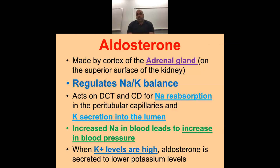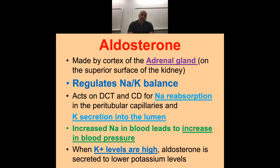If potassium is very high — say from eating a lot of spinach — I'll produce aldosterone to pee it out and lower it, which simultaneously increases sodium and blood pressure. One of the first things we say when someone has high blood pressure is to cut salt from their diet: if you lower salt levels in your bloodstream, there's less solute to hold onto water, and blood pressure decreases.